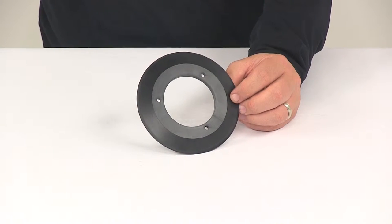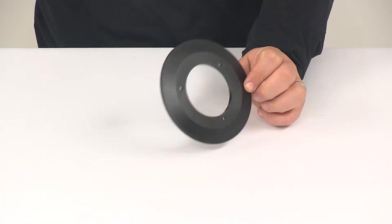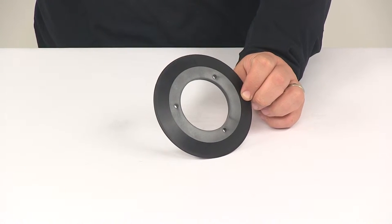Today we're going to be taking a quick look at the Bright Ideas trim ring for Puck Style light fixtures. This is going to add a clean finish look to the installation of your Puck Style light from Bright Ideas.